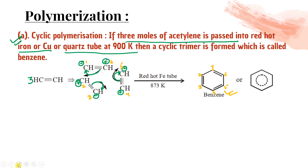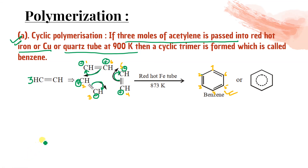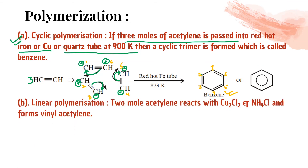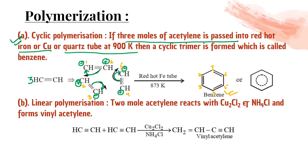So when acetylene undergoes cyclic polymerization it gives benzene. For linear polymerization: two moles of acetylene react with CuCl₂ and NH₄Cl to form vinyl acetylene (polyacetylene), and n-moles form polyacetylene.